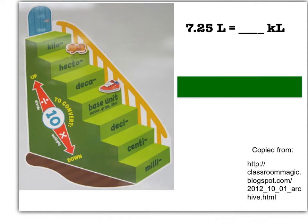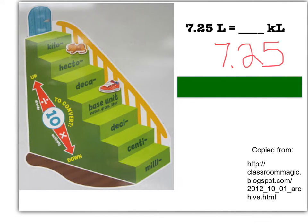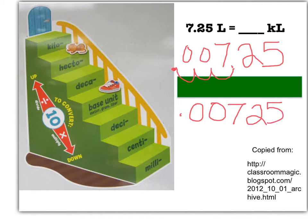In this example, we have 7.25 liters, and remember, liter is one of our base units. We want kiloliters. Start at your base unit — liters — and go up: 1, 2, 3. Since we went up, we're moving to the left. So with 7.25, we move three places to the left, filling in two blanks with zeros. Our answer is 0.00725 kiloliters.